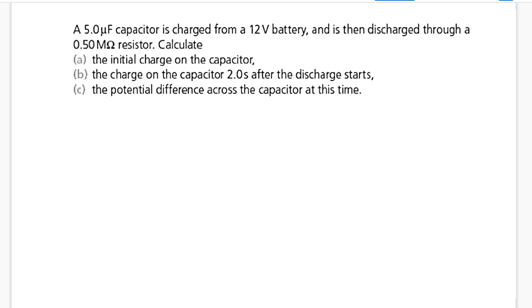Hello again. With this question, I have a 5 microfarad capacitor, which is 5 times 10 to the power negative 6 farad, charged from a 12 volt battery. This is the potential difference, 12V. It is then discharged through a 0.50 megaohm resistor.